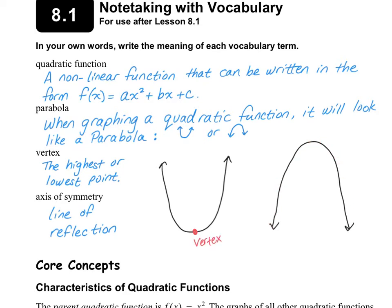On this graph here, the graph is going upside down, and so the vertex is the highest point. The axis of symmetry goes in the middle and always crosses through the vertex. Here's the axis of symmetry for the left one, and here is the axis of symmetry for the right one. I usually simplify axis of symmetry by just writing AOS, so you will see that a lot in my notes.